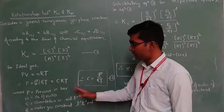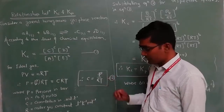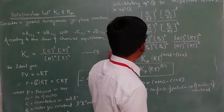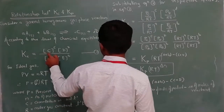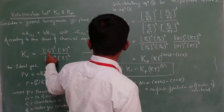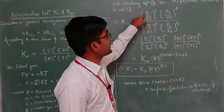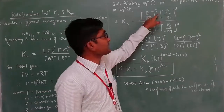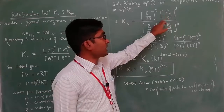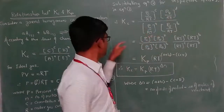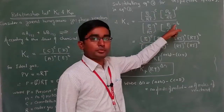Now let us substitute Equation 2 into Equation 1. Write the meaning of each term below the equation. So replacing concentration terms with pressure units: for product C, concentration = Pc/(RT) raised to c; for product D, concentration = Pd/(RT) raised to d; for reactant A, concentration = Pa/(RT) raised to a; and for reactant B, concentration = Pb/(RT) raised to b.